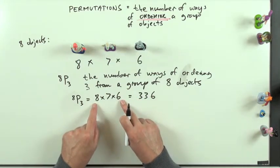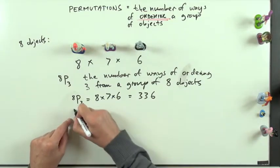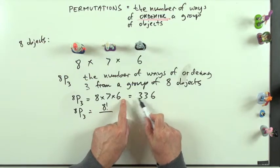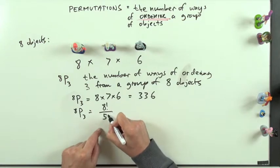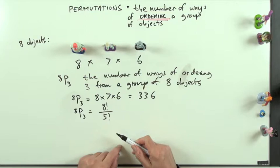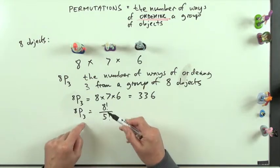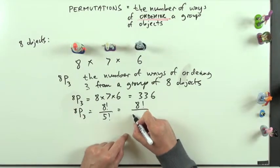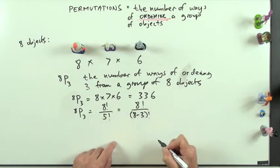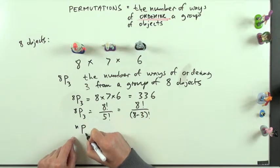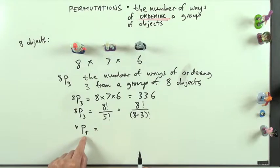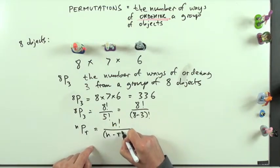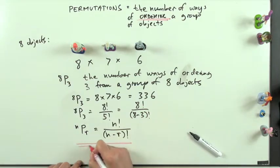How could you write this using factorial notation? That's 8P3, and it equals part of 8 factorial. What's missing from 8 factorial is the 5 factorial part, so it's 8 factorial divided by 5 factorial — or writing 5 as (8 minus 3), that's 8! / (8−3)!. In general, nPr — the number of ways of ordering r objects from a group of n — equals n! / (n−r)!. That is the formula for permutations.